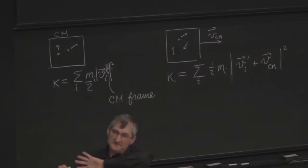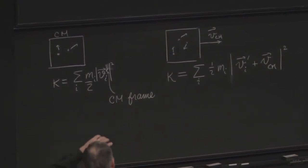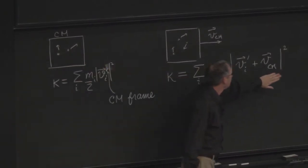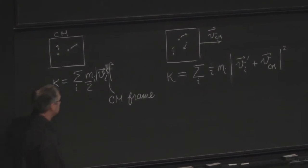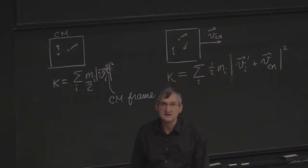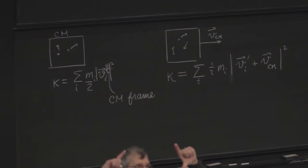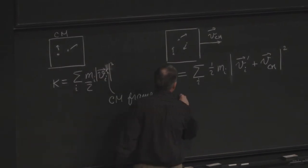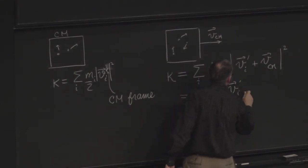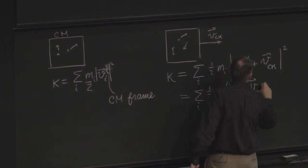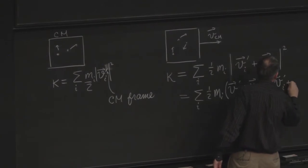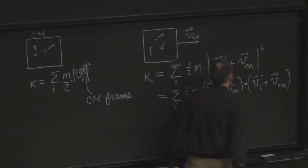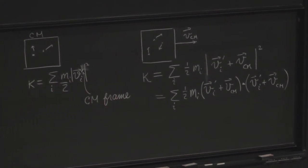Is everyone clear on that? If the whole thing is translating to the right at speed vcm, then every particle's velocity gets that additional component. And we now have to add up all the velocity squared. So we're going to use, what are we going to use to simplify this? How do we express the magnitude squared of a vector? Dot product. Dot product, right? So this is equal to the sum on i of 1 half m sub i, v prime i plus v center of mass, dot v prime i plus v center of mass.